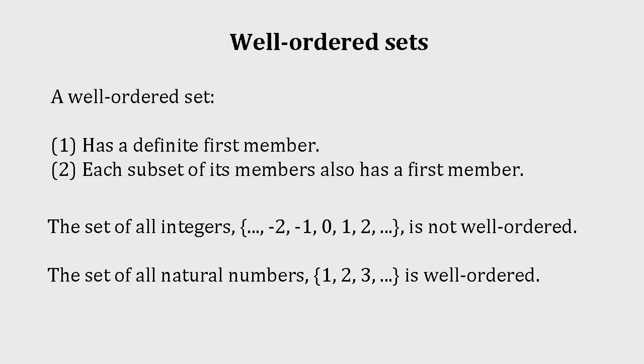The set of all natural numbers, {1, 2, 3, ...}, is well-ordered, because despite having no specified member at the end, it has one at the start, and every subset containing only natural numbers also has a first member.